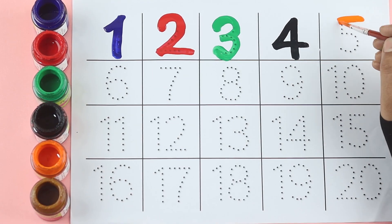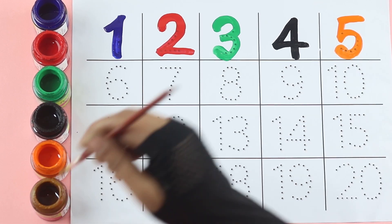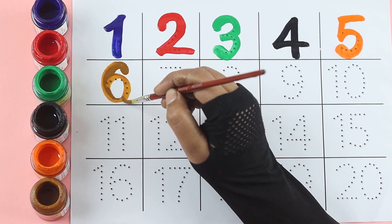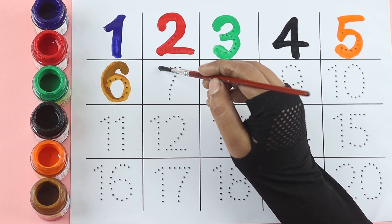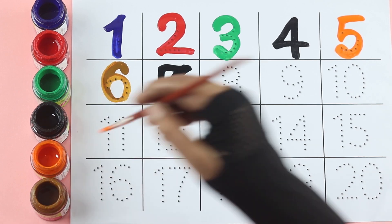Five, brown color. Six, black color. Seven, orange color.